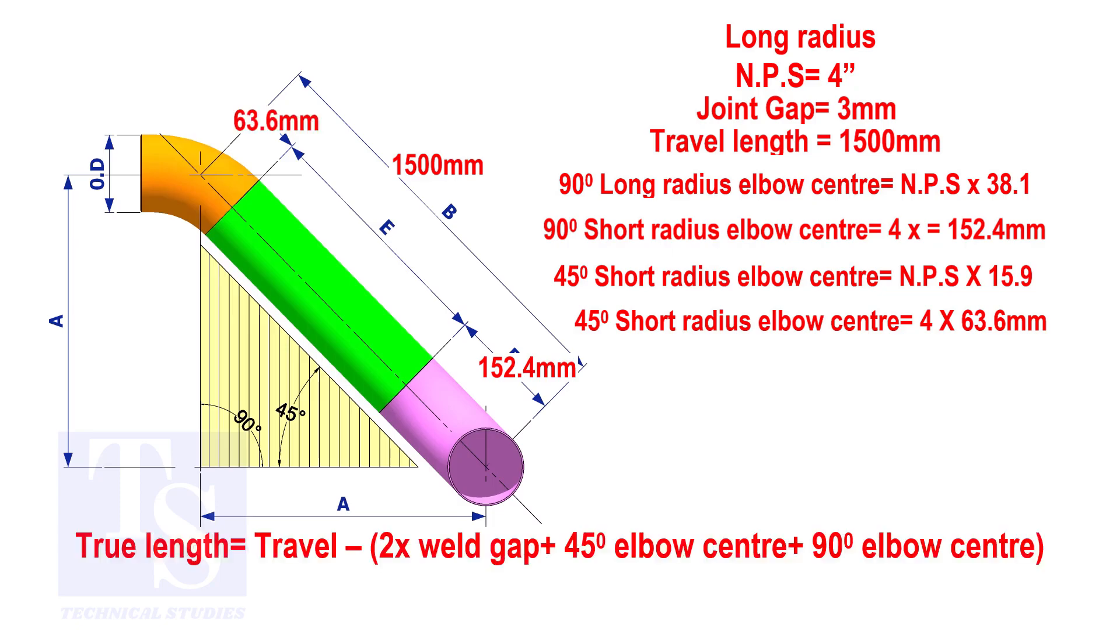Apply the calculation. The true length of the pipe is 1278 millimeters.